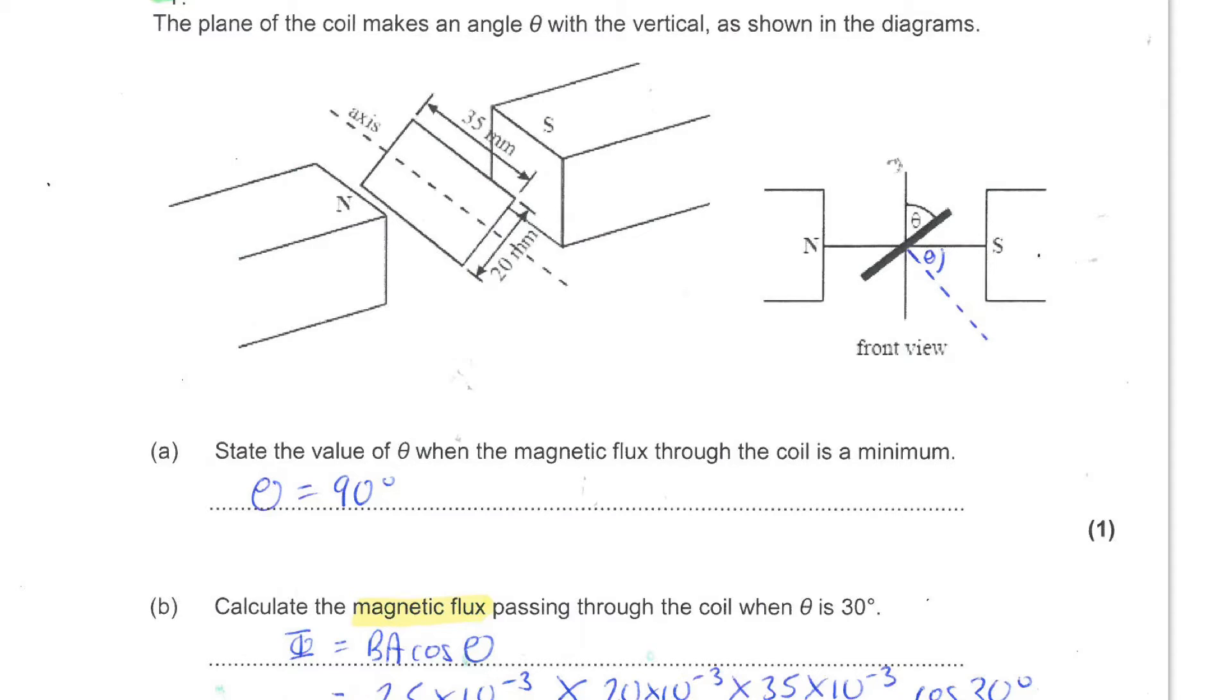The theta in that equation refers to the angle made between the normal to the coil and the magnetic field. That is the theta that I have marked in blue in this diagram. So here is the normal facing the area of the coil. Here is the direction of the field. And the theta defined in the equation is shown here.